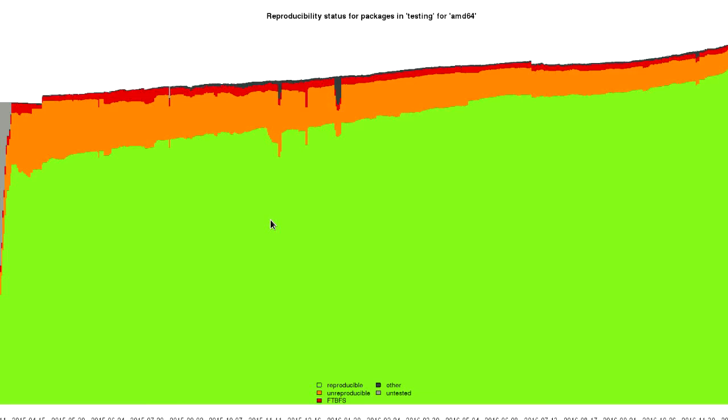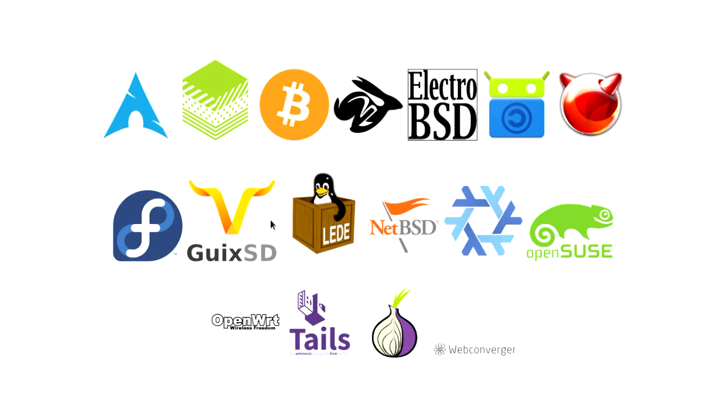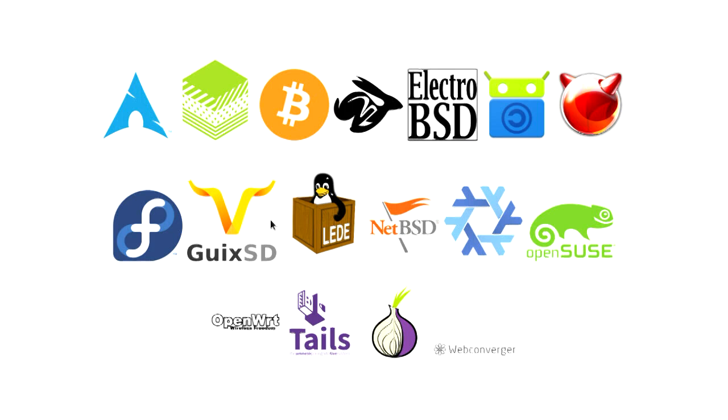We've gone from being something like 29% reproducible in Debian to currently 93% reproducible. The green you can see is the reproducible packages. The graph gets bigger because more packages are being added to Debian as we go along — it's a moving target. Some blips occur where we've perhaps screwed something up or changed how we vary and test our definitions. It's not just a Debian project — in the last two years we've made a big conscious effort to include other distributions, doing as much as possible under the umbrella of reproduciblebuilds.org.